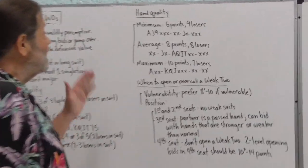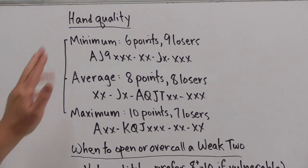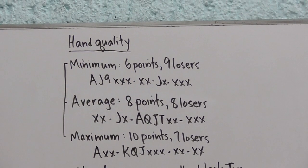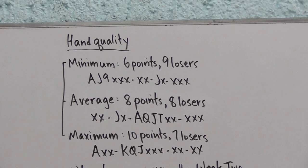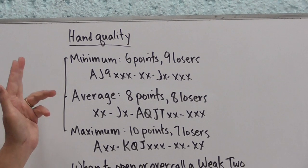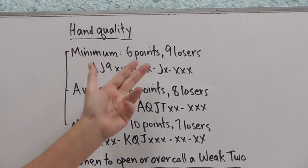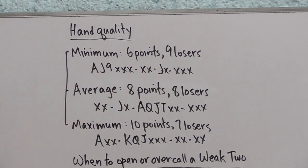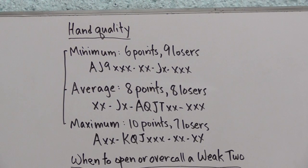Now hand quality. A minimum weak two opening bid or jump overcall will have closer to the six point range and will typically have nine losers. This would be a typical hand. If we open two spades with this hand we would call this a minimum because we have two losers in spades, two in hearts, two in diamonds, that's six and three in clubs. That's nine losers and six high card points. Typical minimum weak two.